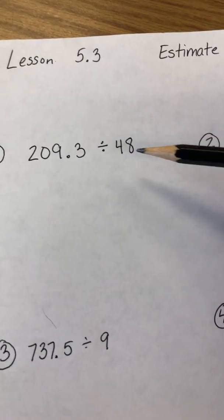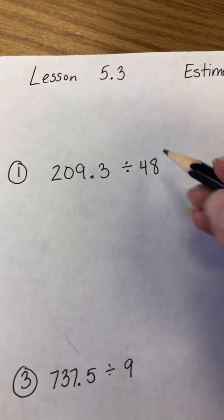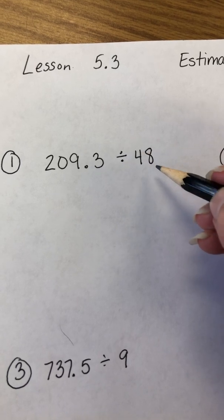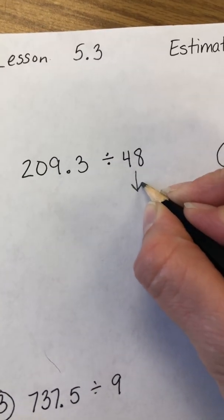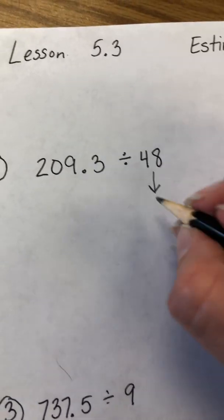You have a decimal divided by a number. First thing you're going to do is look at your divisor. If it's two digits, we're going to round it to the nearest ten. So 48 will round up to 50.